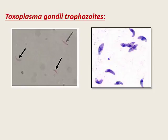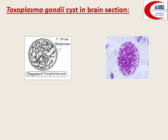Toxoplasma gondii trophozoite is recognized by its crescent shape and nucleus — some may confuse it with promastigote, but there is no flagellum, no kinetoplast, and no undulating membrane. It is identified by the crescent shape and absence of free flagellum. The second Toxoplasma form is the brain cyst in brain section — the content inside showing bradyzoites. Finding this shape means it is the Toxoplasma gondii cyst in brain.